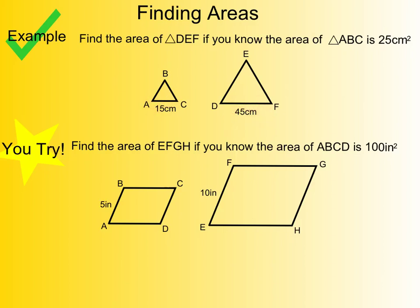What you can do is create a similarity ratio. Your smaller to larger is 15 over 45, which reduces to 1 over 3. So that's your similarity ratio.